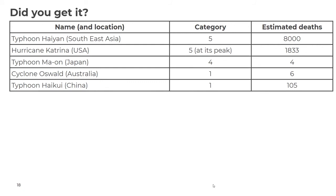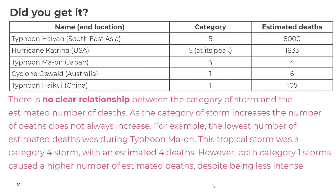There is no clear relationship between the category of storm and the estimated number of deaths. As the category increases, the number of deaths does not always increase. For example, the lowest number of estimated deaths was during Typhoon Mayom — a category four storm with an estimated four deaths. However, both category one storms caused a higher number of estimated deaths despite being less intense. This takes us to the last part of our lesson.